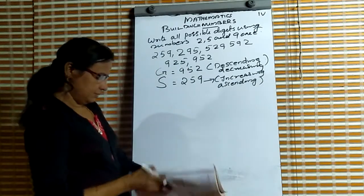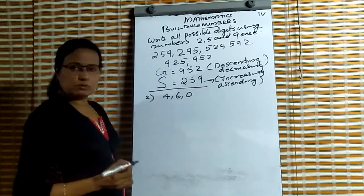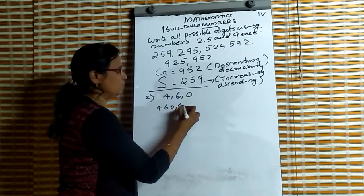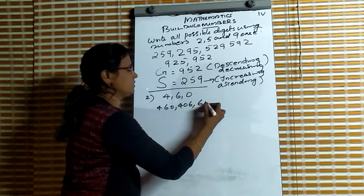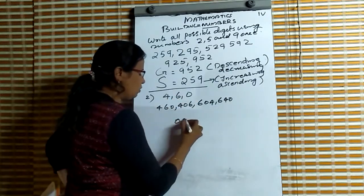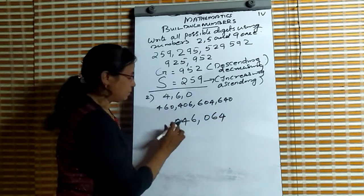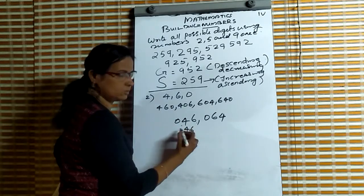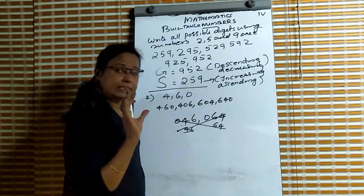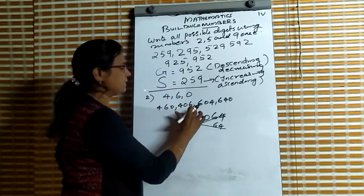Second question: use digits 4, 6, 0. Write all possible numbers using 4, 6, 0. Numbers starting with 4: 460 and 406. Numbers starting with 6: 604 and 640. When 0 starts a number — 046 or 064 — this is not a three-digit number.